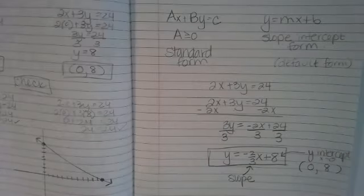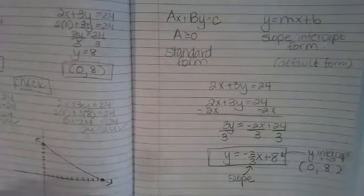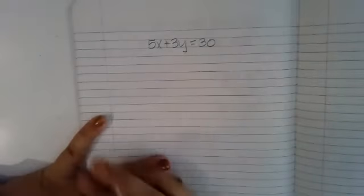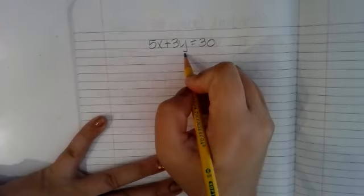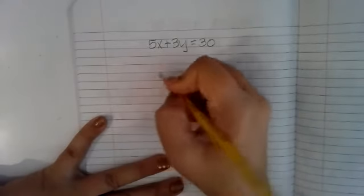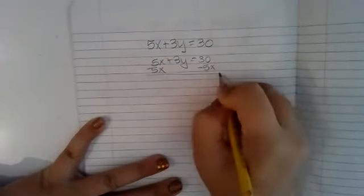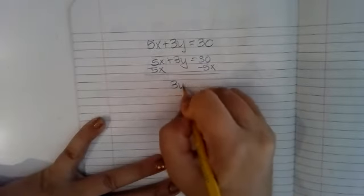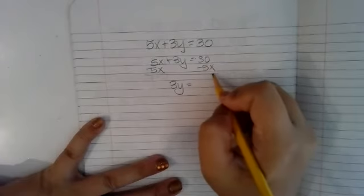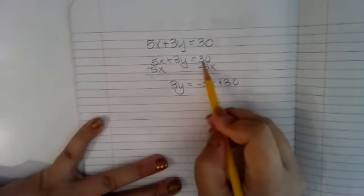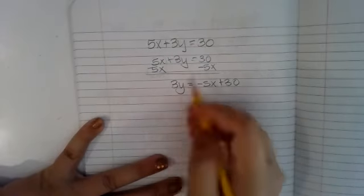That's us converting between the two different forms. I'm going to do one more example. I have 5x plus 3y equals 30. Again, I'm isolating my y. I'm going to move the 5x to the other side, which creates a zero pair. I'm left with 3y equals negative 5x plus 30 — they're unlike terms so they stay separate.